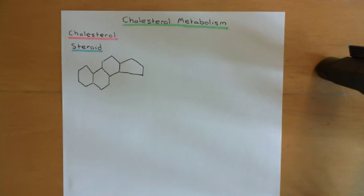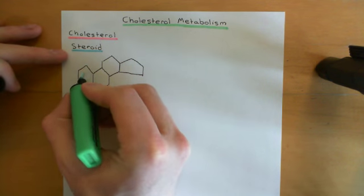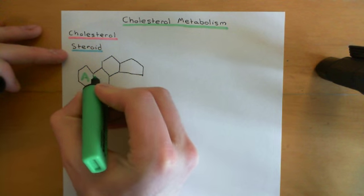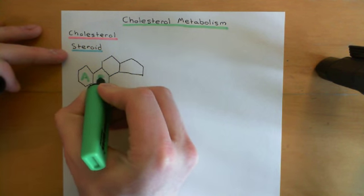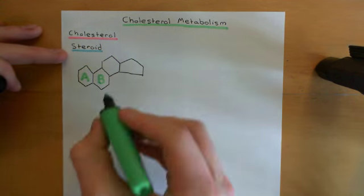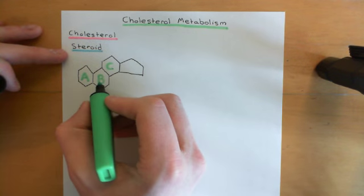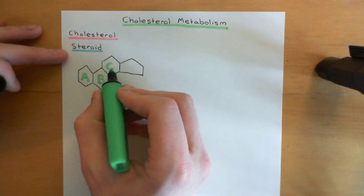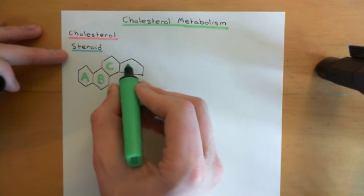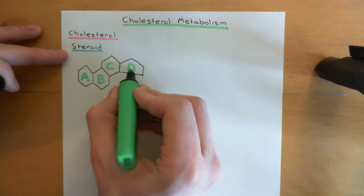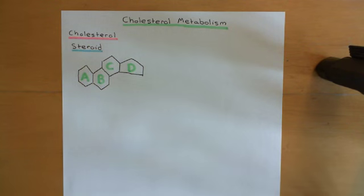People name the rings of the steroid structure with letters. This first ring is known as ring A. The second ring is ring B. The third ring is ring C, and the fourth ring over here is ring D. Those are the names of the four rings of the steroid structure.